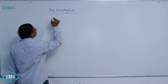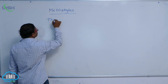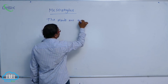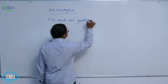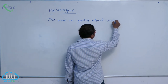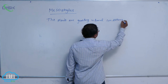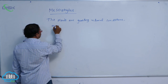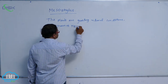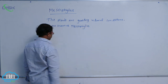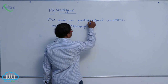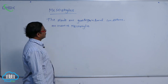Mesophytes. The plants are growing in normal conditions are known as mesophytes. Mesophytes are plants that grow in normal conditions.